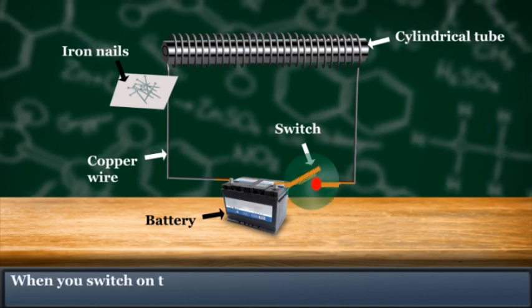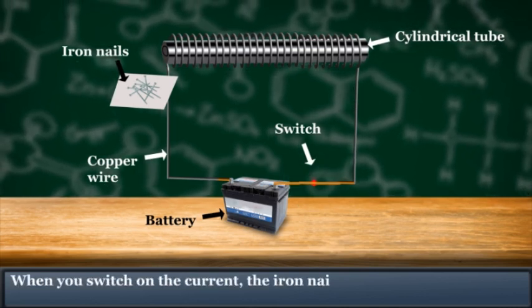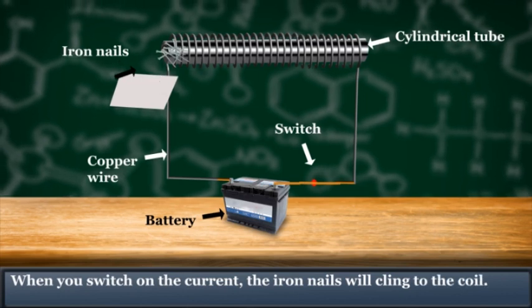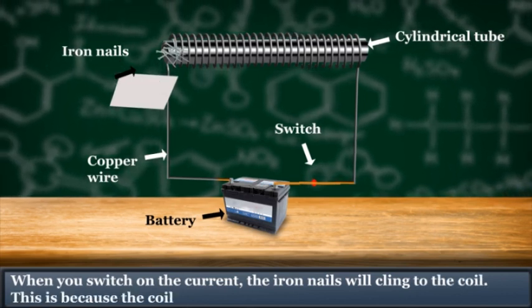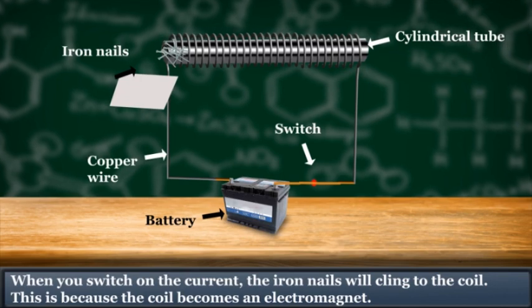When you switch on the current, the iron nails will cling to the coil. This is because the coil becomes an electromagnet.